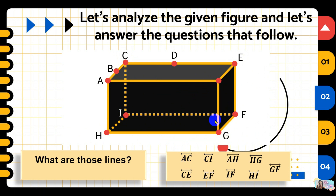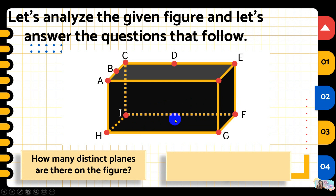Now let's proceed to the next question: how many distinct planes are there on the figure? For a point we need a capital letter; for a line, at least 2 points; for a plane, we need at least 3 points on it. Since our box has 6 faces, let's check whether each face has at least 3 points — if so, we have 6 distinct planes.